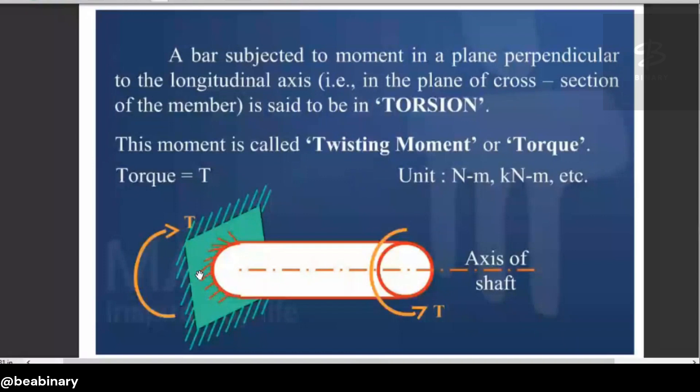So, a bar subjected to moment in a plane perpendicular to the longitudinal axis. So, this axis of the shaft is basically its longitudinal axis. So, a bar subjected to a moment in a plane. This plane is perpendicular to the longitudinal axis.